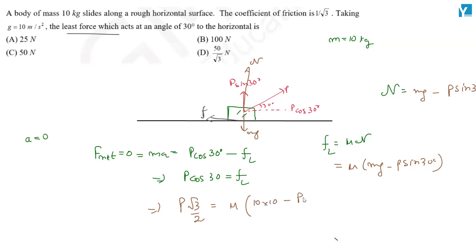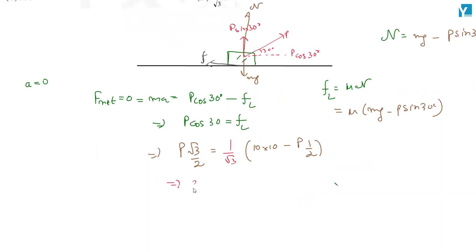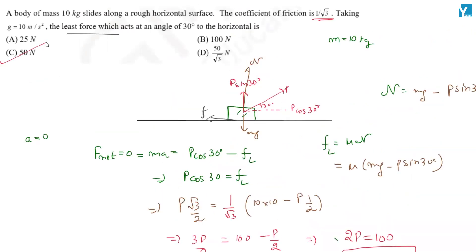minus sin 30 degrees. We have the value of mu which is equal to 1 by root 3. P root 3 by 2 is equal to 100 minus P by 2, which is equal to 50 newtons. Check the options to see the answer.